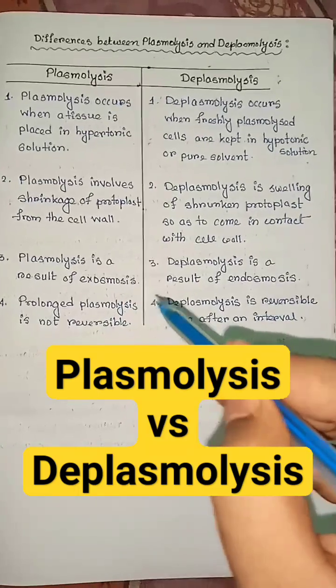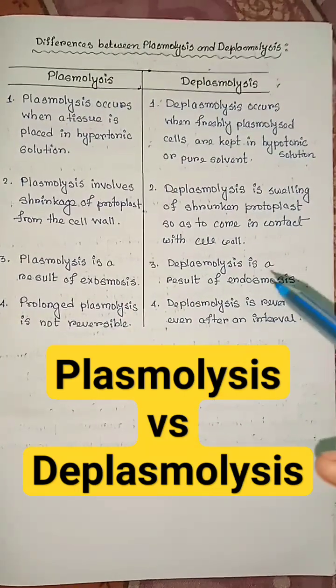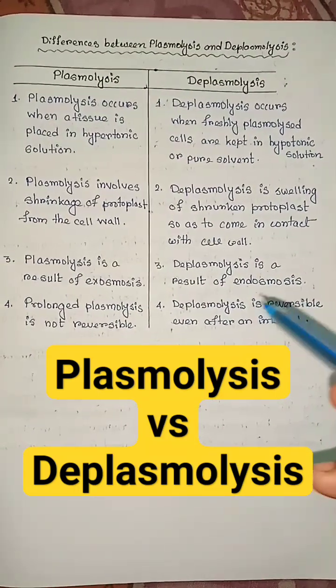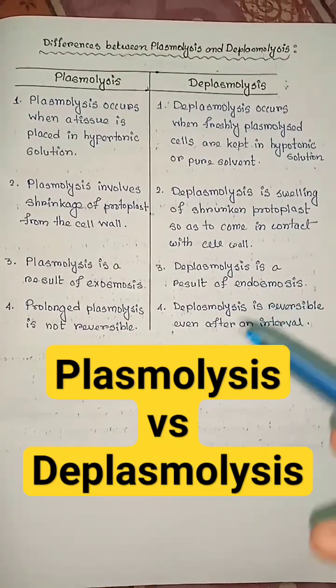Plasmolysis is a result of exosmosis, but deplasmolysis is a result of endosmosis.